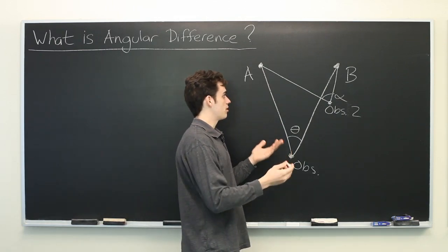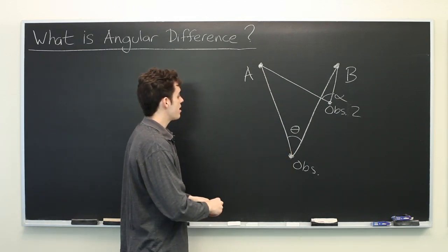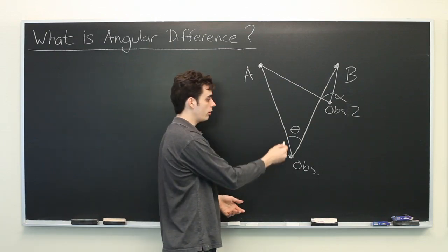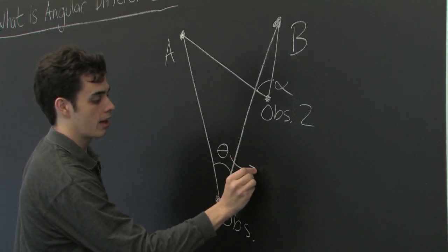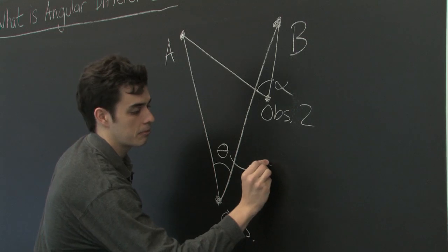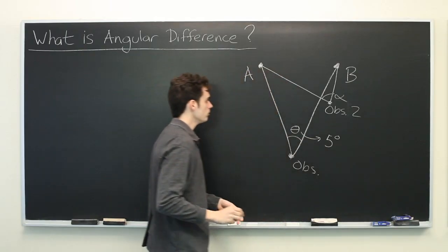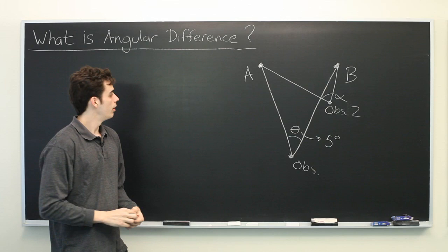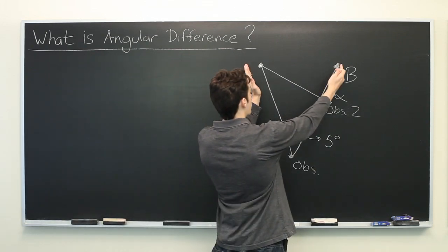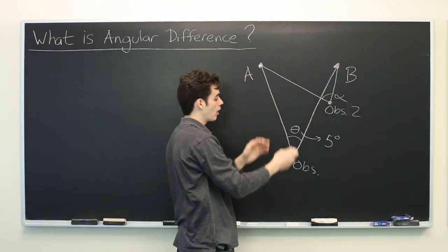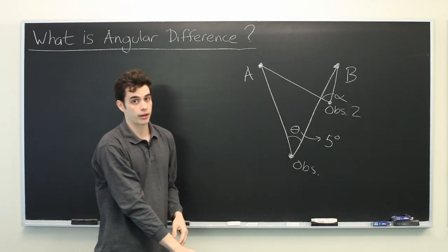So the opposite is also true. If the angular difference is very small, like if we were to say theta is only five degrees, then one of two things must be true. Either the objects are very close together or the observer is very, very far away.